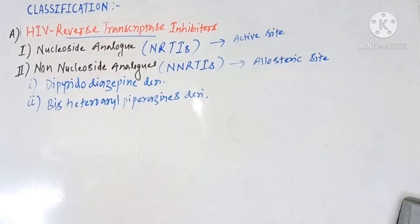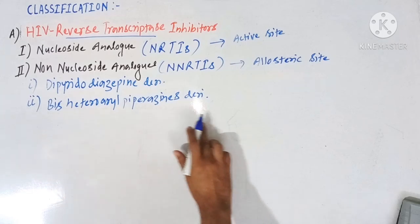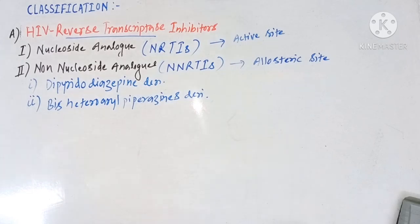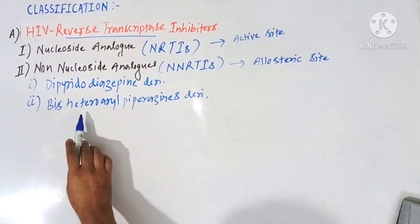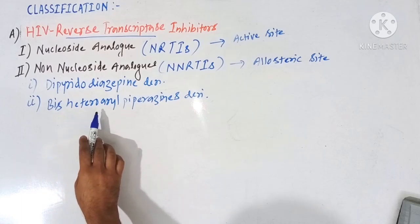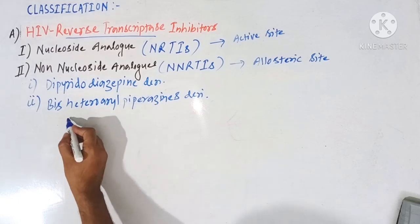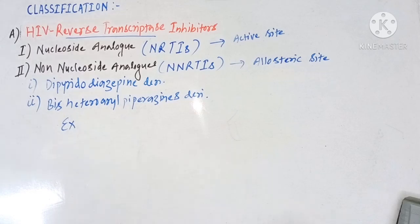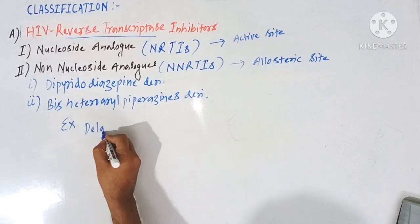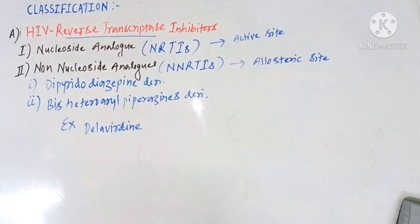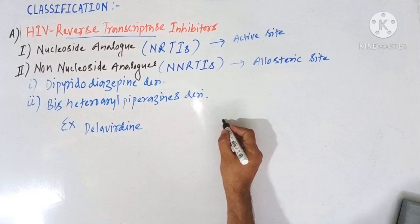Now the second class of this non-nucleoside analog is the heteroaryl piperazine derivative. As the name indicates, there are two heteroaromatic rings present along with a piperazine ring. The example of a drug which comes under this class is delavirdine.